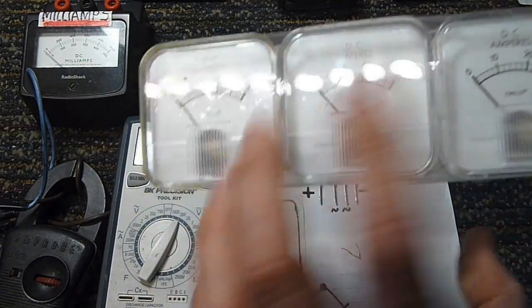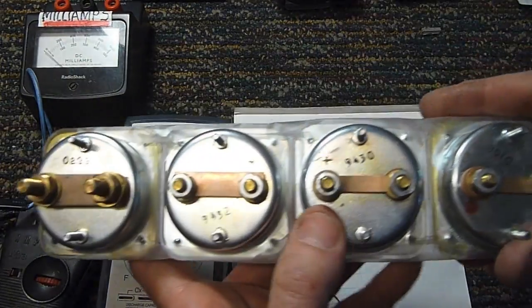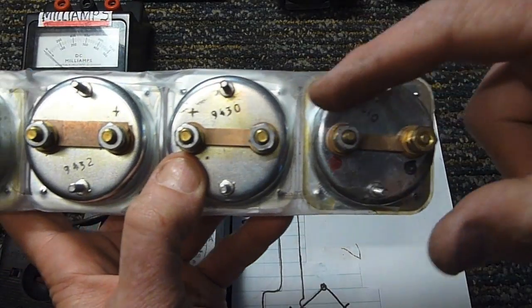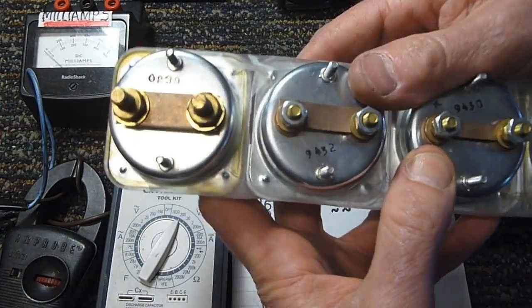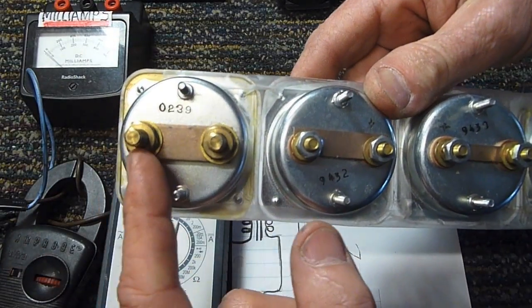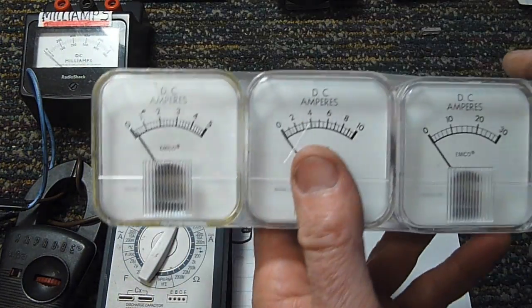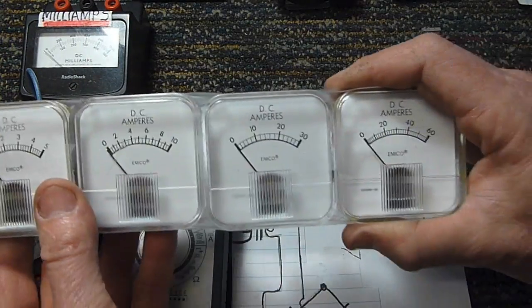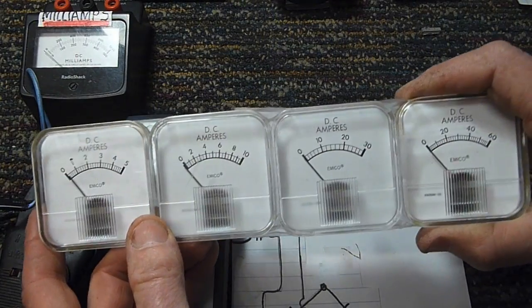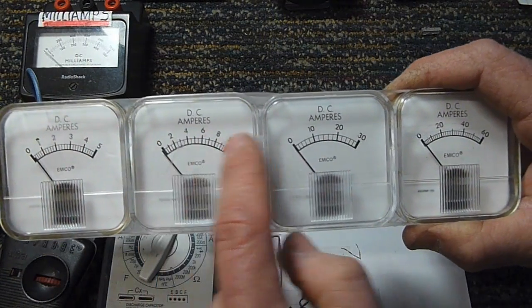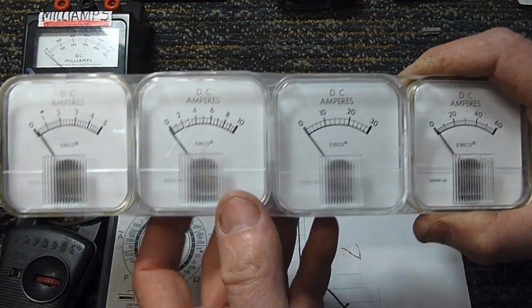So for example, if you take a look at the back of these ammeters you'll notice that they all have what appears to be a short across the input terminal, and depending on the scale of the meter is what is calibrated by the size of the shunt. If you take a look at these four meters here, you might know that all four of them are identical except for the print on the front and the size of the shunt on the rear.